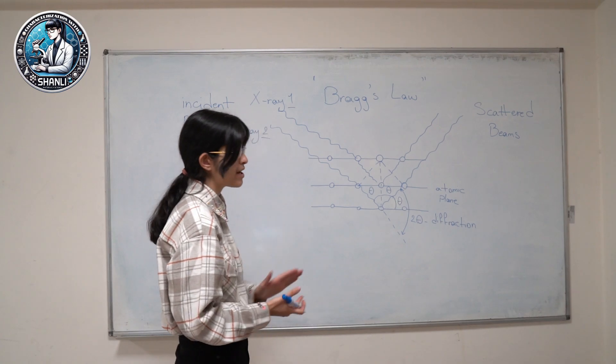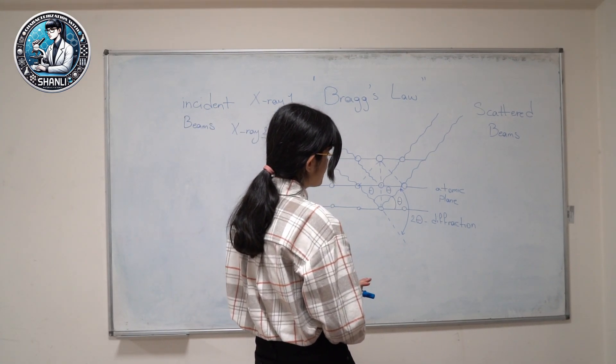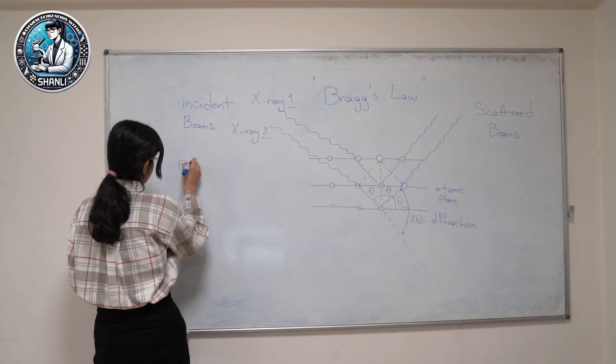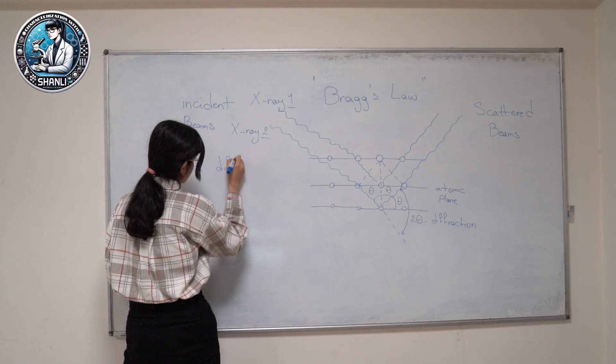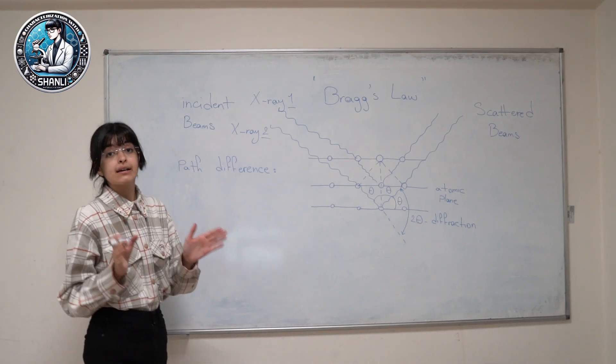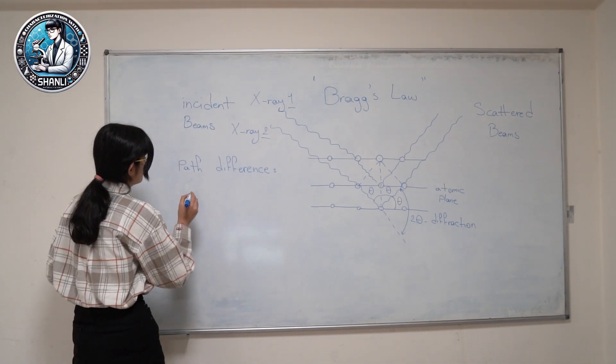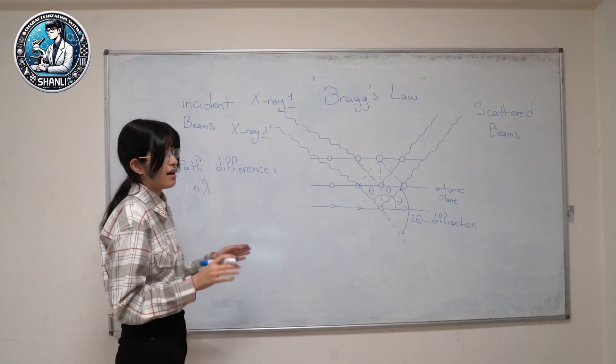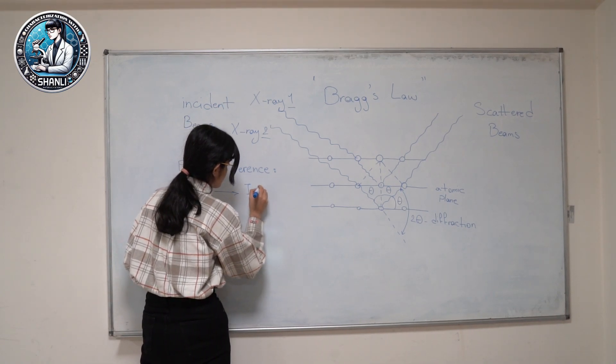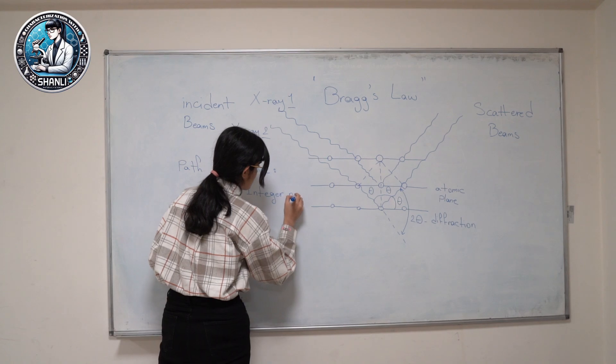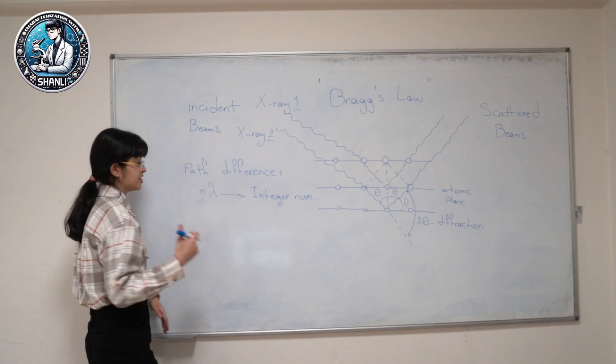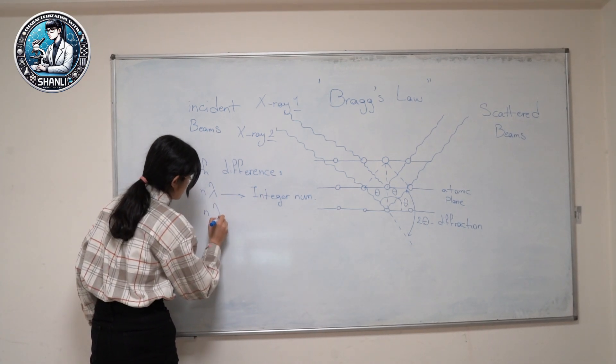The path difference between X-rays scattered from adjacent planes is given by... so path difference is going to be calculated by the equation n lambda, where n lambda is an integral number. We can also express this formulation in much more detail, like n lambda equals...